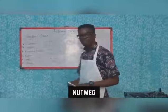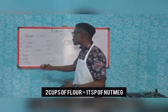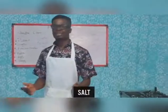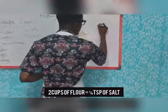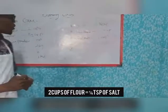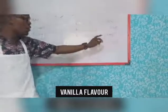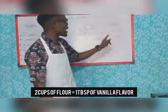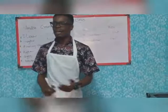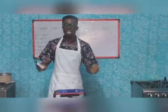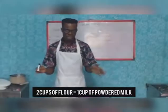The next very important ingredient is salt — one quarter teaspoon of salt. The next ingredient is flavor. For today's cake we'll be using vanilla flavor, which is one tablespoon. The next thing we'll be using is powdered milk. Whenever you use two cups of flour to bake a cake, you are expected to use one level cup of powdered milk. So these are the set-out ingredients for today's class.